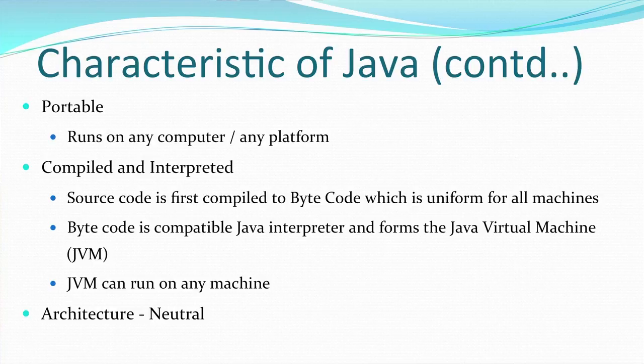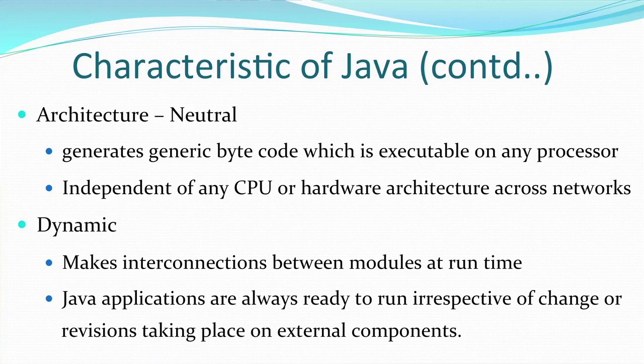Java is one of very few languages that is both compiled and interpreted, which gives it a distinct advantage over other languages. Java is also architecture neutral — it can run on any platform, any computer, any CPU or processor — because the Java Virtual Machine generated is architecture neutral. It generates generic byte code that is executable on any processor, independent of any CPU or hardware architecture across networks.